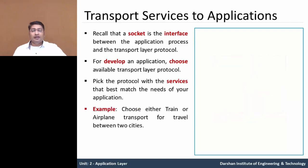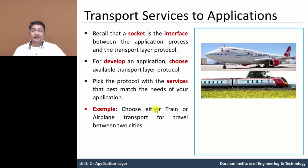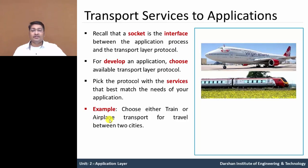Let's take an example: choosing either train or aeroplane transport for travelling between two cities. If I am in Rajkot and I want to travel to Bombay, I have two options — by train or by plane. The difference is that train takes a longer time period, while airplane takes a shorter time period.